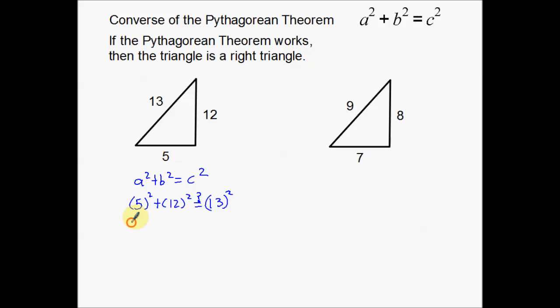All right, so 5 squared is 25, 12 squared is 144. Is that equal to 169? Well, actually in fact, 25 plus 144 is 169, so these are in fact equal.